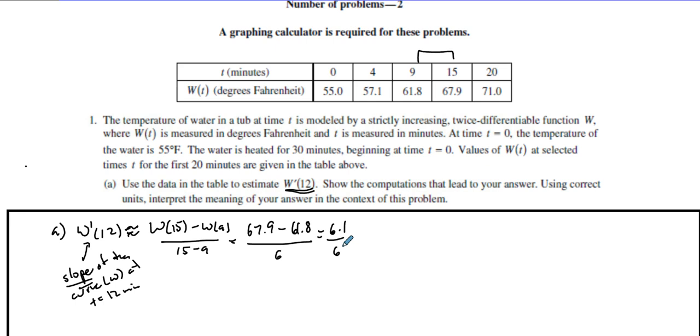We have that and then you divide that by 6. So we have 6.1 divided by 6, and what you should get is approximately 1.017. That's going to be degrees Fahrenheit per minute. Degrees Fahrenheit per minute, so I'm using correct units.